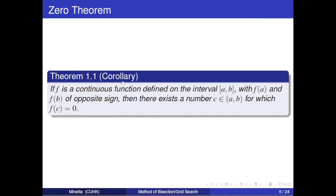The second one is the corollary of the first one. If f is a continuous function defined on the interval [a, b] with f(a) and f(b) of opposite sign, then there exists a number c in interval [a, b] for which f(c) equals zero. Compared with the first one, this one just let k equals zero and we can get it.